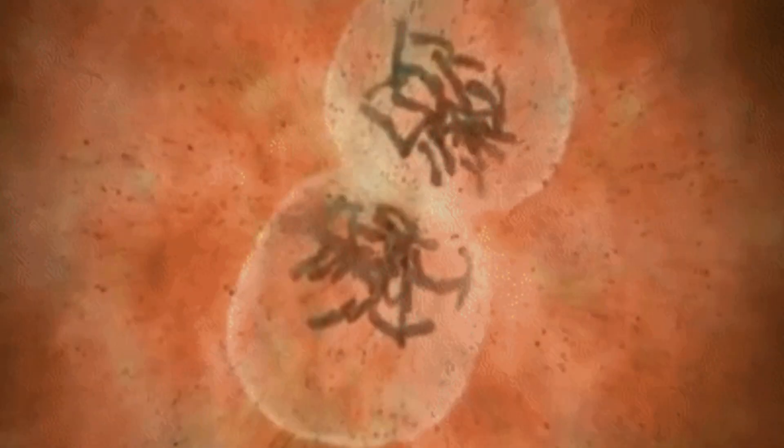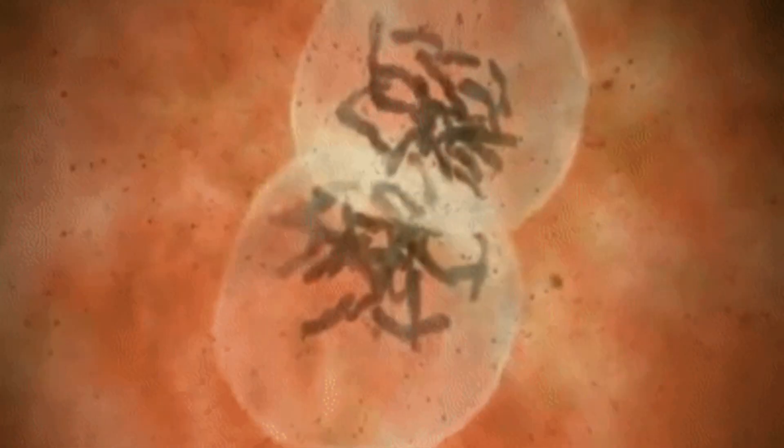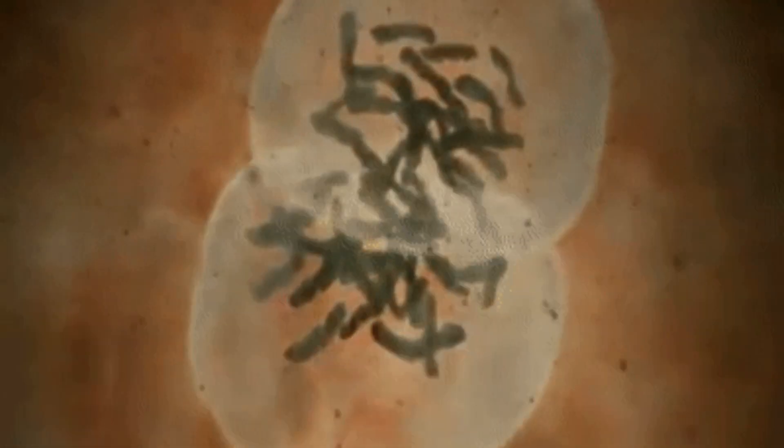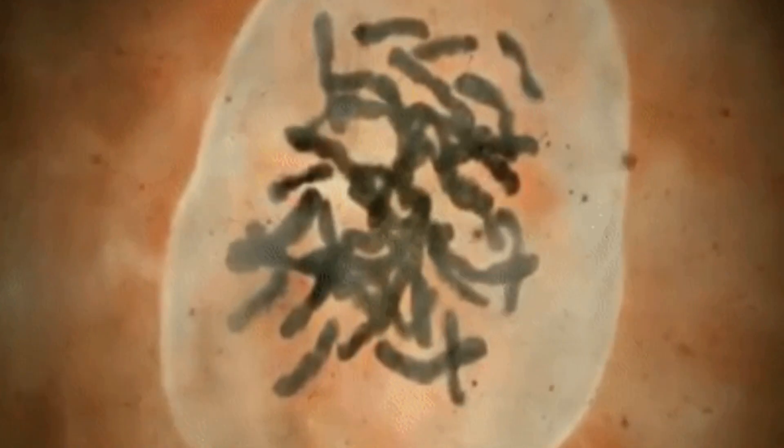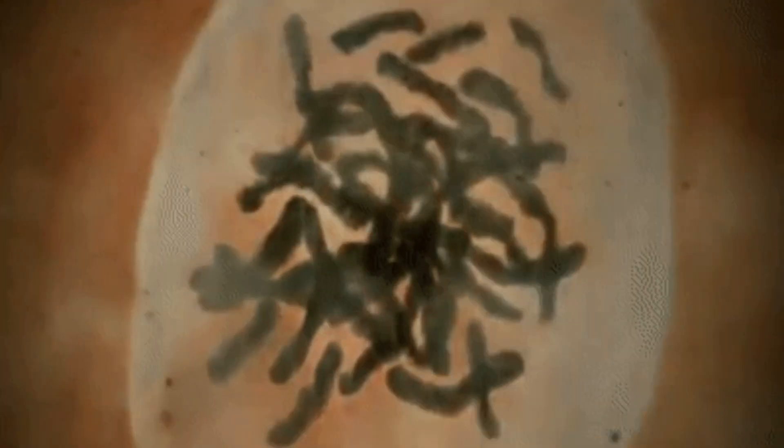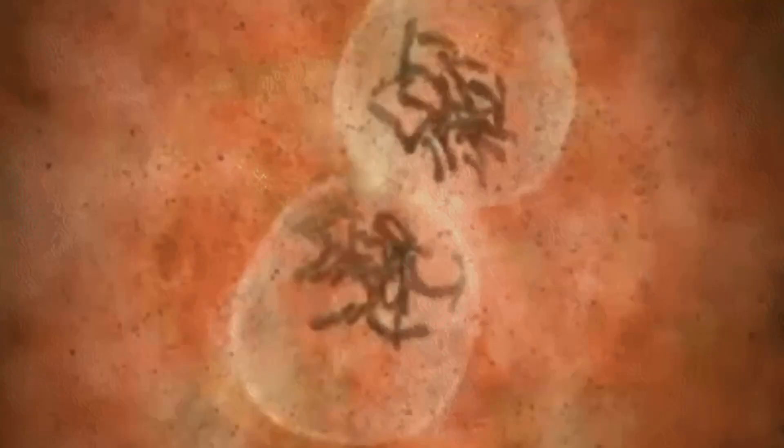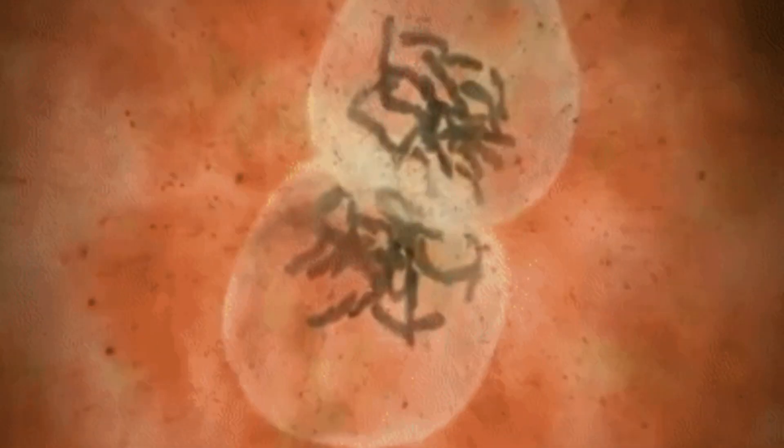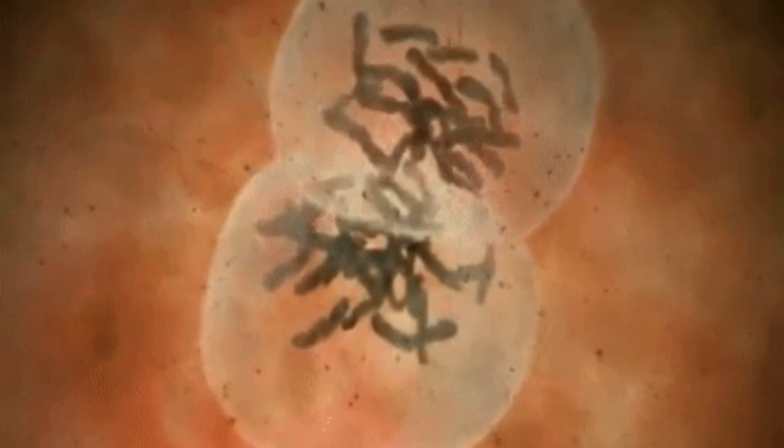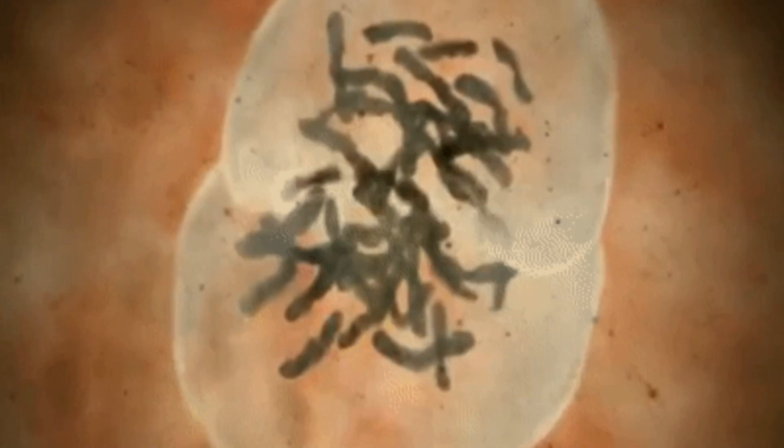Once the sperm is inside the egg, the man and the woman's genetic material, which contains 23 chromosomes each, fuse together to complete the process of fertilization. It is at this point that the baby's genetic makeup is complete. This includes its gender, hair color, eye color, and every other characteristics unique to the cell.